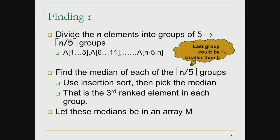It is important to notice that the last group could be smaller than 5 if n is not a multiple of 5. In each of these groups we find the median element. Recall that each group has 5 elements except possibly the last one. For this discussion, let us assume the last one also has 5 elements. We pick the median element in each of the n/5 groups using insertion sort, sorting the 5 elements and picking the median — that is, the third ranked element in each group. We place these median elements into an array m.